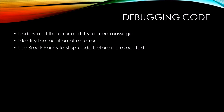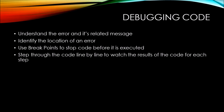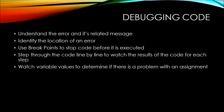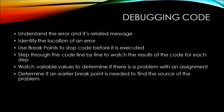One important tool that we have as developers are breakpoints. Breakpoints stop the code before it's executed at a specific spot. This allows you to step through the code line by line from the breakpoint to watch the results of the code to see what happens at each step. Another important thing to do is watch your variable values to determine if there is a problem with an assignment to the variable. Then, you may need to determine if an earlier breakpoint is needed to find the actual source of the problem.